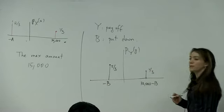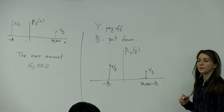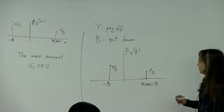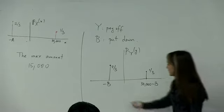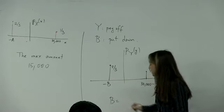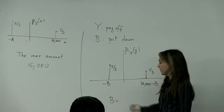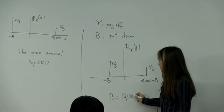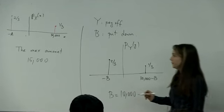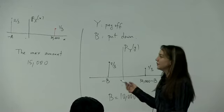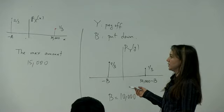What is the balance point? b equals ten thousand. Now let's define expectation.